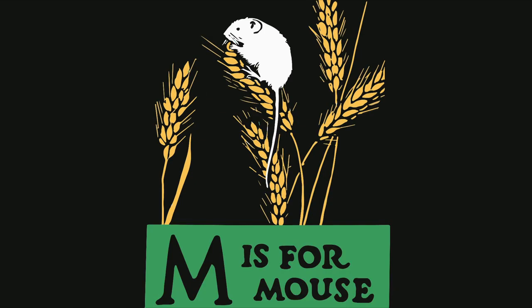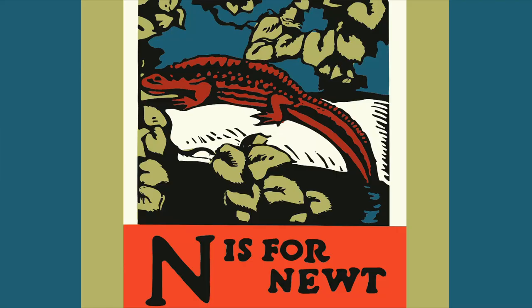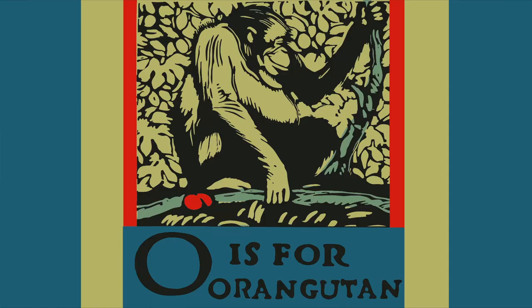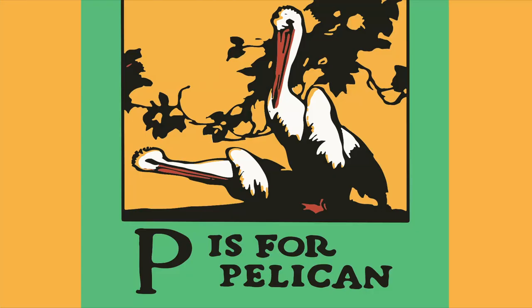M. M is for mouse. N. N is for newt. O. O is for orangutan. P. P is for pelican.